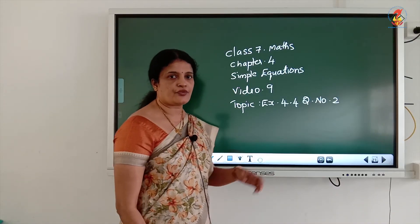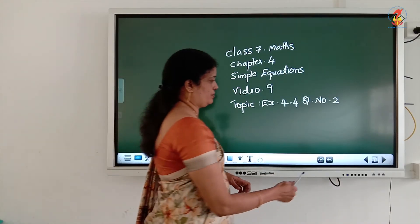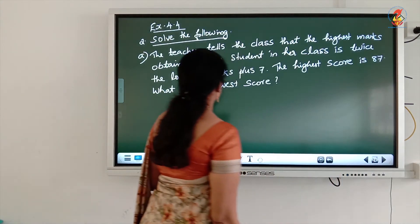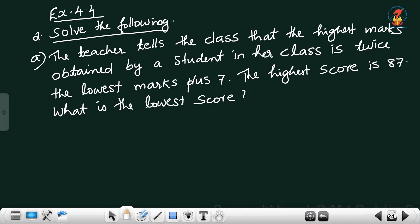Next topic: Exercise 4.4, question number 2. Solve the following: the teacher tells the class that the highest marks obtained by a student in her class is twice the lowest marks plus 7. The highest score is 87. What is the lowest score? We have to find out the lowest score. We can write lowest score is equal to x.